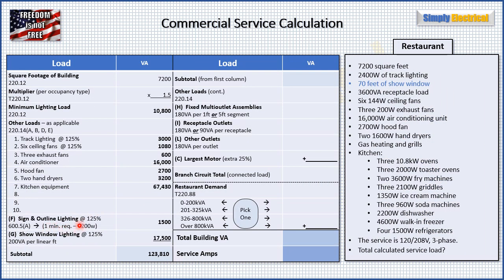Next, we go to sign and outline lighting. We don't have anything in our example that says we have a sign or outline lighting. However, 600.5A tells us a minimum of one circuit is required, and 220.14F tells us that circuit must be a minimum of 1,200 watts. Times 125%, that gives us 1,500 VA. Remember, this minimum of one circuit requirement is per door of public access to the building — if you have two doors of public access, you need two circuits.